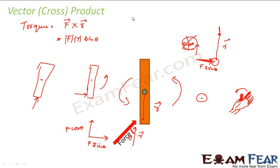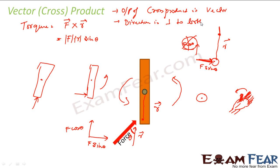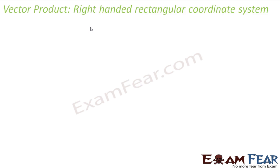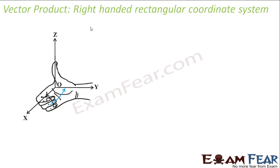Two things to observe: first, the output of cross product is a vector, because it has direction. Second, the direction is perpendicular to both inputs. I have two inputs, F and R, and the direction of output — the torque — is perpendicular to both. In the vector product, we use the right-hand rectangular coordinate system. You applied some force and found that the torque came out to be magnitude of F times magnitude of R times sin theta, in a direction perpendicular to both F and R.